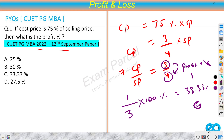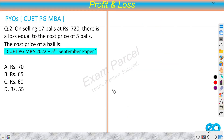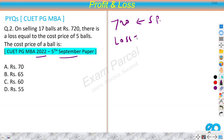This is a very easy question. The next question is important — from the 2020 paper: on selling 17 balls at rupees 720, there is a loss equal to the cost price of 5 balls. What is the cost price of a ball? So we have 720 as selling price.